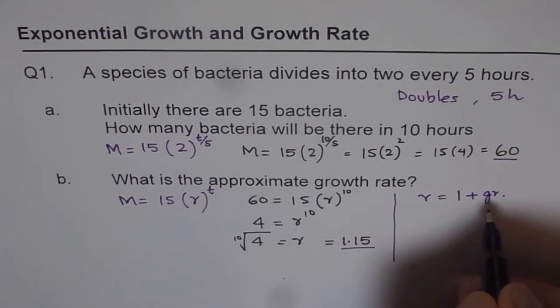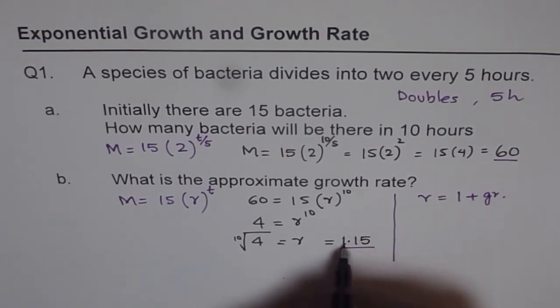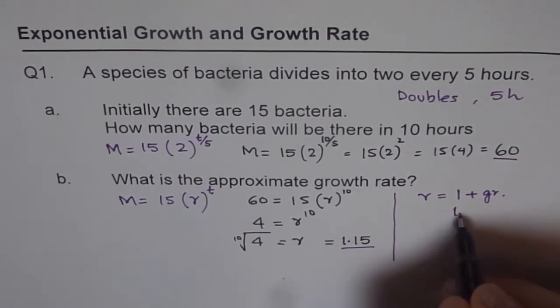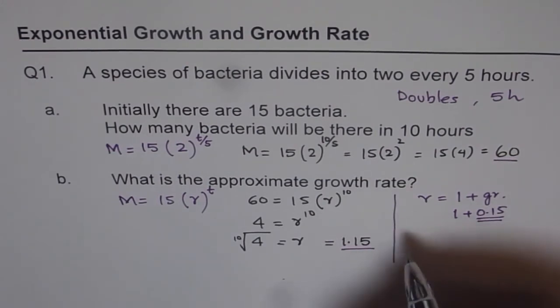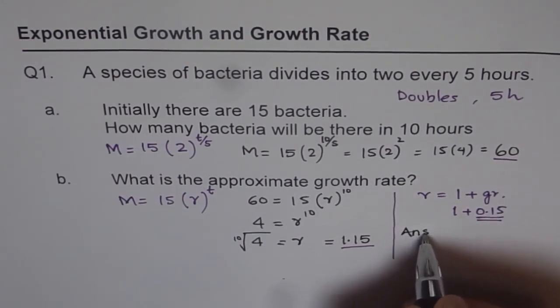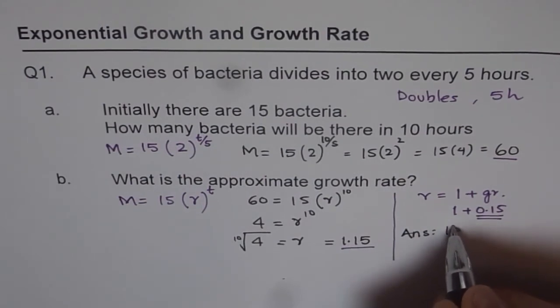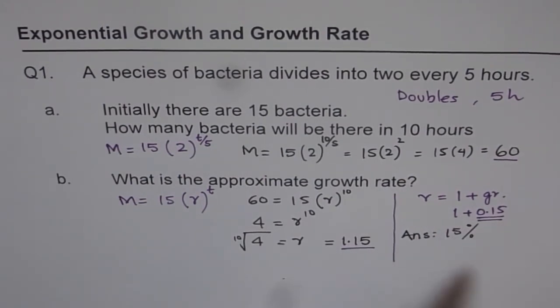Actually, R is 1 plus the growth rate, plus the growth rate in percent. So we can write 1.15 as 1 plus 0.15. So growth rate is 15%. That is the growth rate. So our answer is actually, growth rate is 15%.